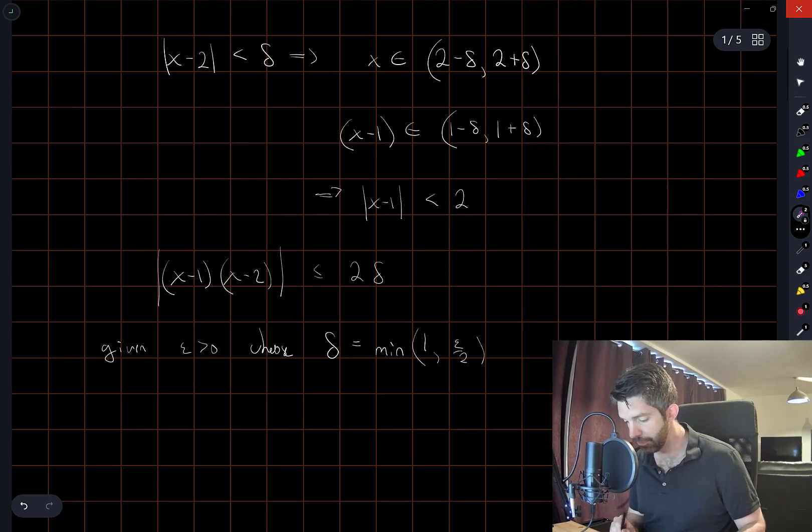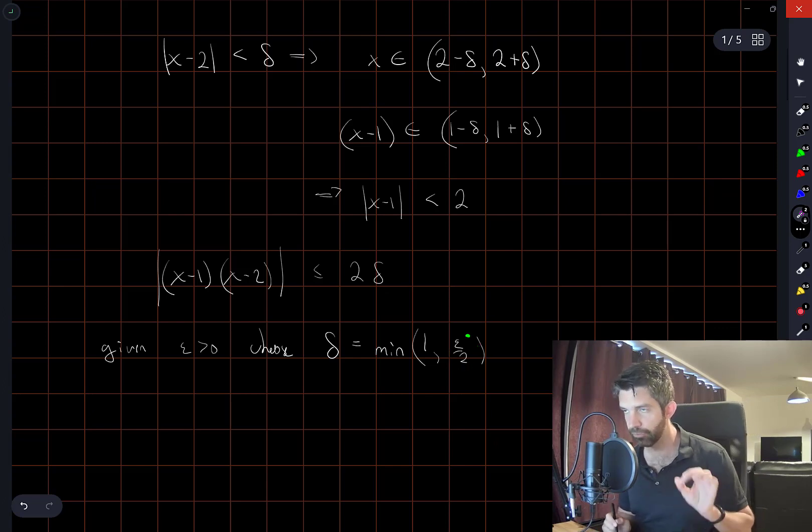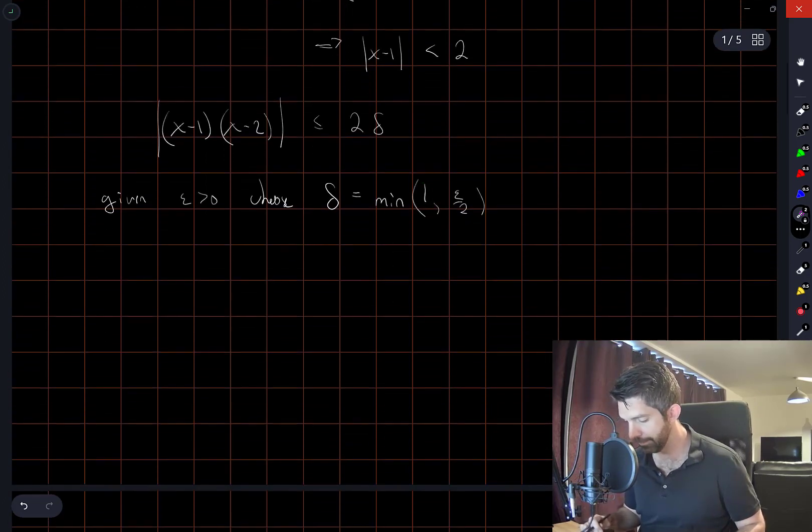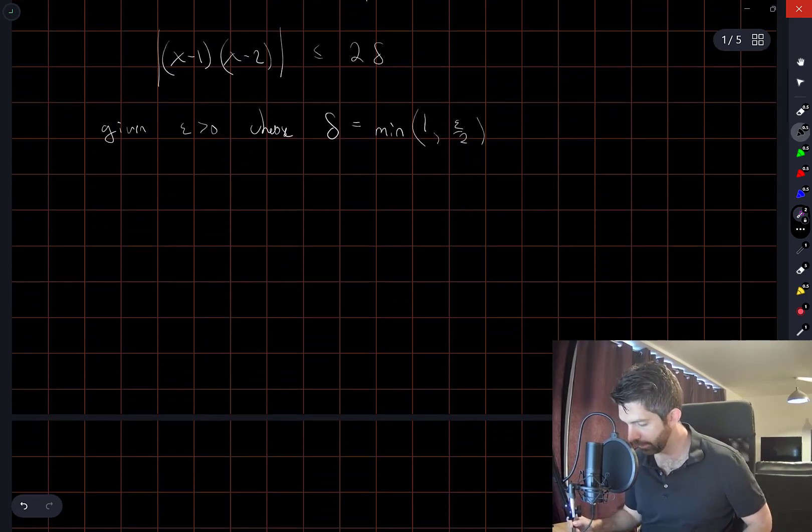This leads me to choose delta as being epsilon over 2, as long as epsilon is small enough. If epsilon is not small enough, then this may not be true with that choice of delta. So I'm also going to choose delta to be less than 1. So let's go through the entire construction here.